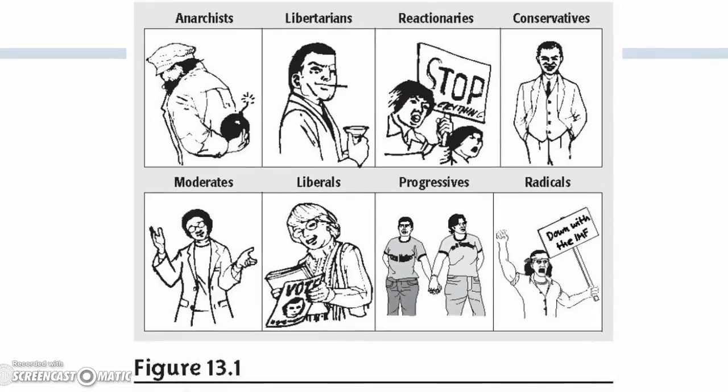Here you see some pictures from the book. If you look at these very carefully, you can see each one. The anarchists look like bomb throwers. The libertarians look smug, drinking their martinis, probably wealthy. Reactionaries are also angry. Conservatives also look a little bit smug and wealthy.